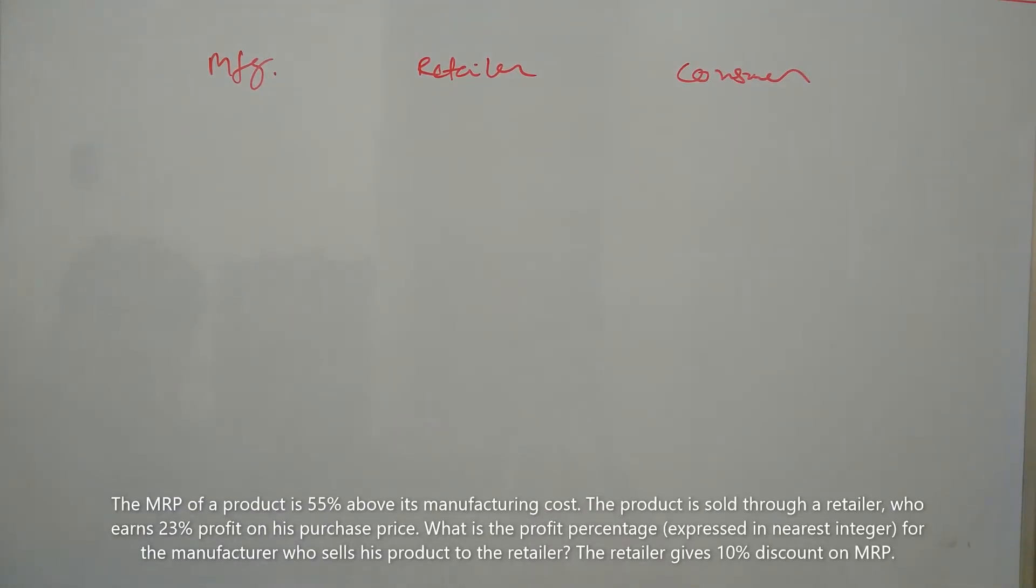At various stages, the price and profit is changing for the product. Let's say the manufacturing cost for this item is 100 rupees. We need to find out the profit percentage for the manufacturer who is selling this to the retailer. For the manufacturer, 100 rupees is the manufacturing cost, and let's say X percent is his profit.